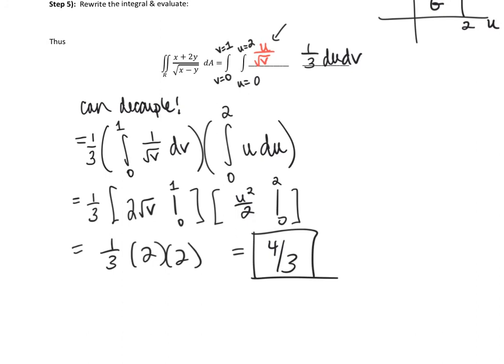And so we should get, at the end of the day, once you decouple, that you get a total four-thirds for this integral. So this was an example of changing a complicated double integral into a simpler integral over a rectangular region by doing a change of coordinates in terms of u and v.